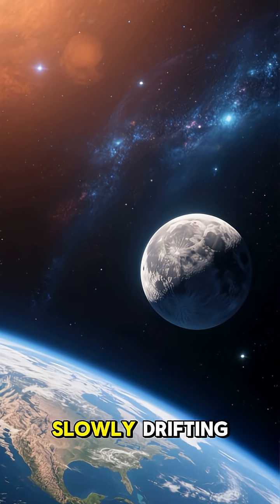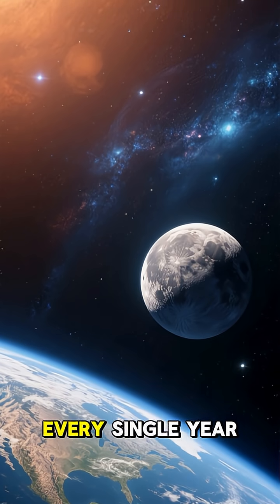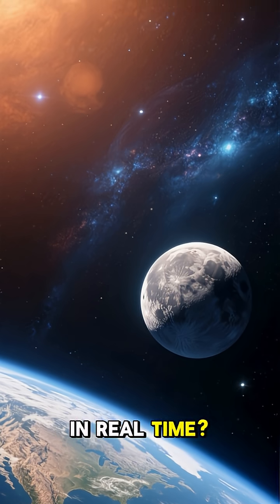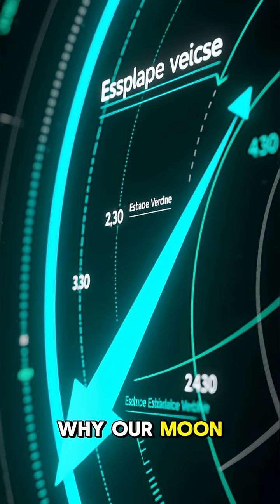Did you know that the moon is slowly drifting away from Earth every single year, and we can actually measure it happening in real time? Here's the crazy science behind why our moon is escaping.